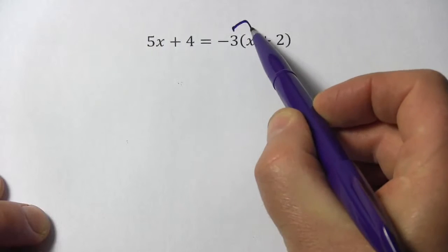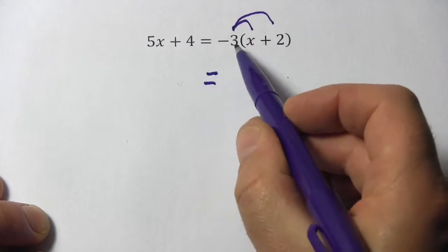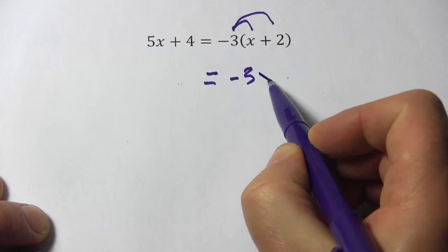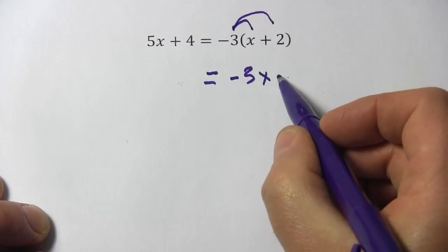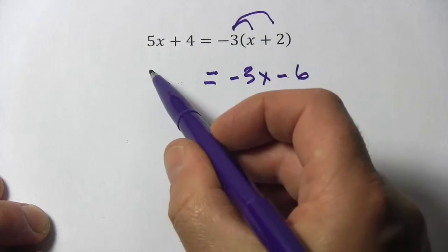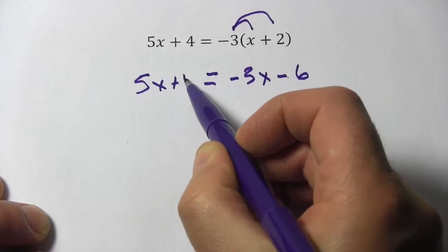So I'm going to take this negative 3 and multiply it through the parentheses. So over here negative 3 times x is negative 3x and negative 3 times 2 is minus 6. Then I've got my 5x plus 4.